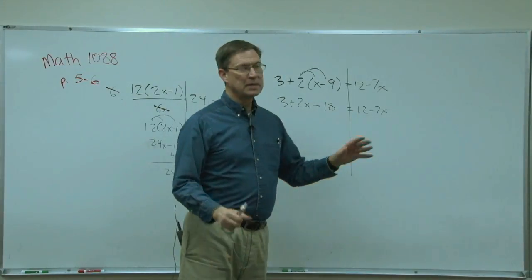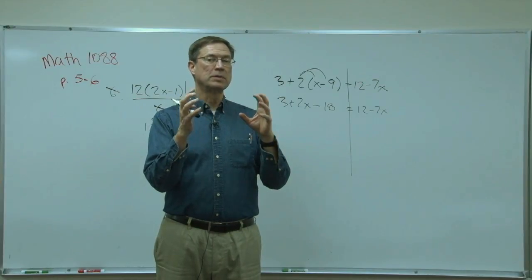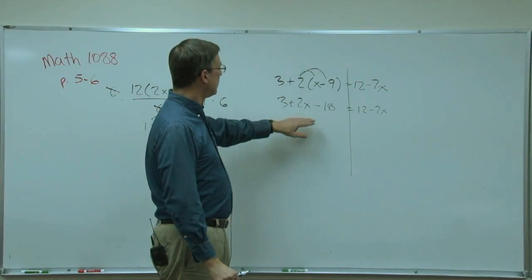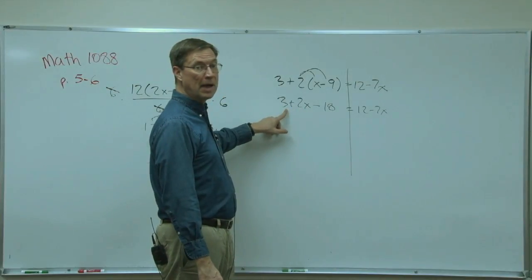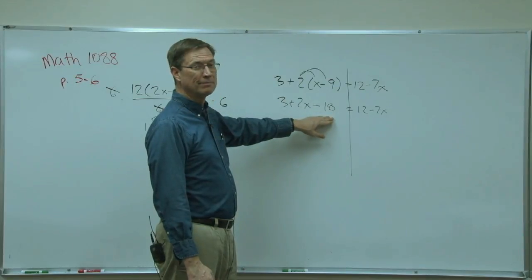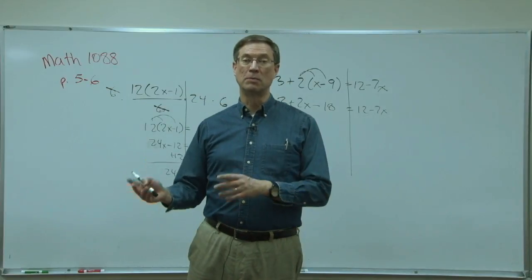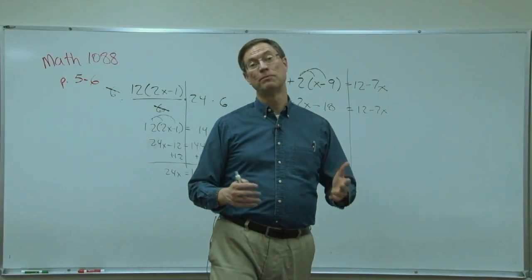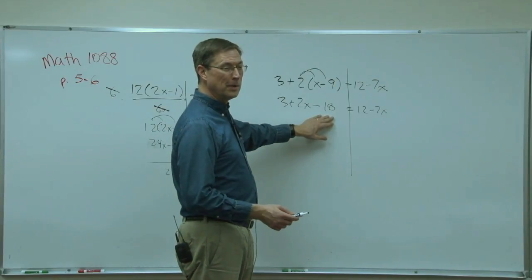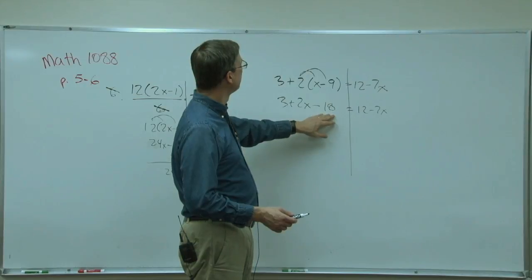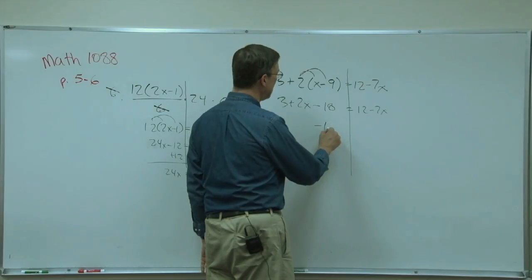Now when you get to a point like this we want to take whatever are like terms on the same side of the equal sign and combine them. So I only have one x term so there's nothing I can do with that, but I can simplify by adding 3 plus negative 18. Do you remember when we're adding and the signs are different we subtract the smaller from the larger, keep the sign of the larger? That was in a previous video that we did about signs of positive and negative numbers.